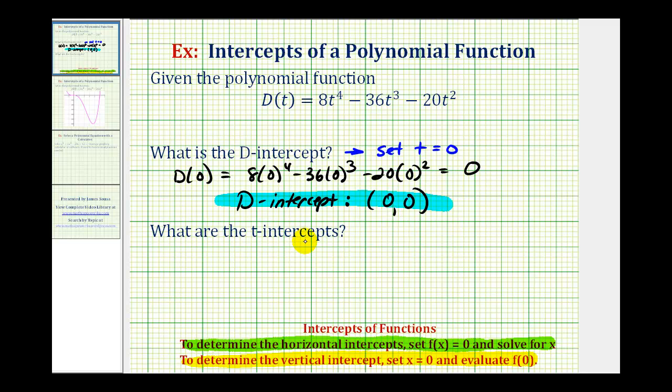To find the t-intercepts, this is the same as finding the x-intercepts. We're going to set the function D(t) equal to zero and solve for t.